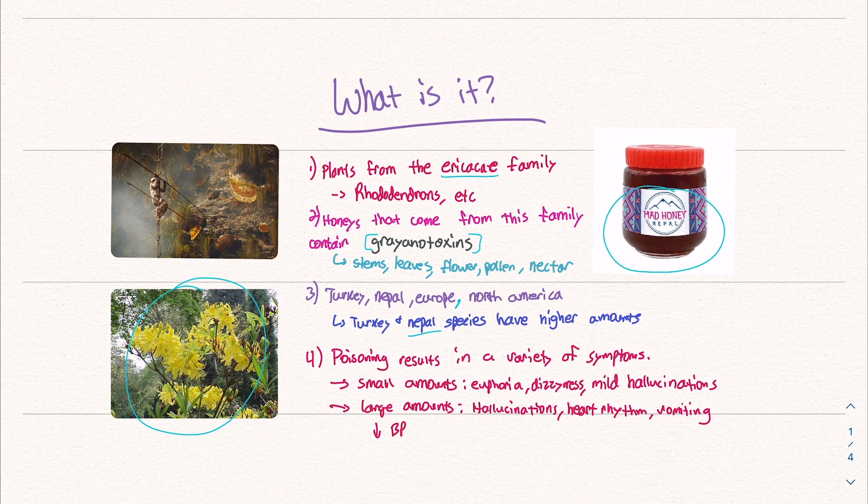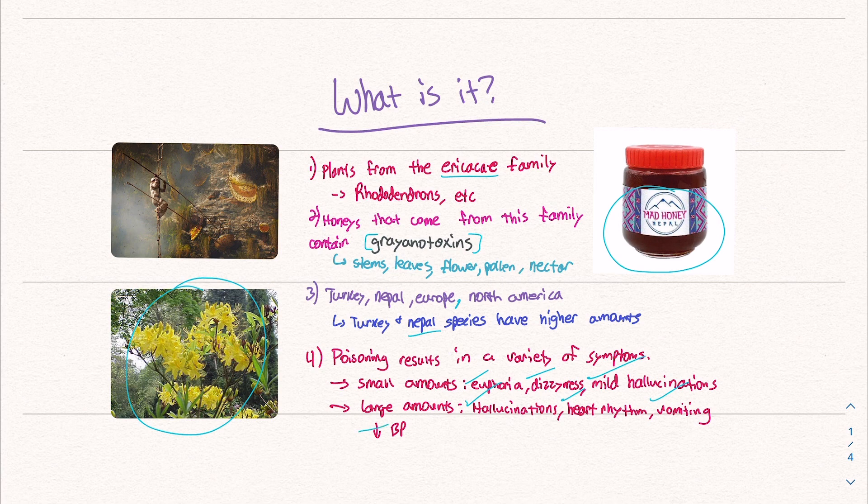Poisoning or intoxication results in a variety of symptoms. A lot of those symptoms depend on how much you consume. Small amounts lead to things like euphoria, dizziness, mild hallucinations. Large amounts can lead to things like more moderate to intense hallucinations, heart rhythm issues, vomiting, low blood pressure. We're going to talk about this stuff in the last slide. So let's continue.